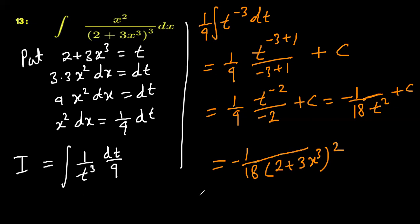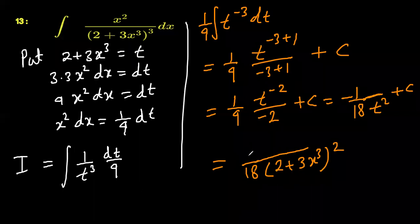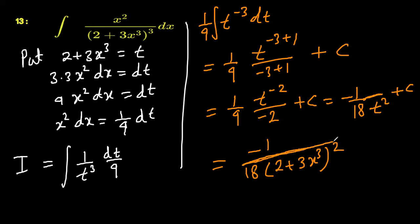You can write it a little better: negative of 1 over 18 times (2 plus 3x³) whole square, plus c.